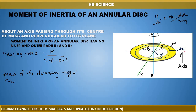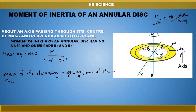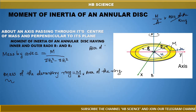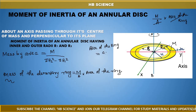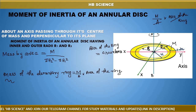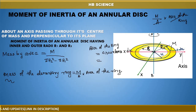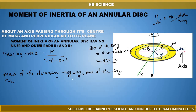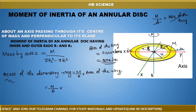Mass of the elementary ring equals mass by area multiplied by the area of the ring. Area of the ring equals circumference into thickness, which is 2πx·dx, where x is the radius. So the mass of the elementary ring dm = (M/A) × 2πx·dx.